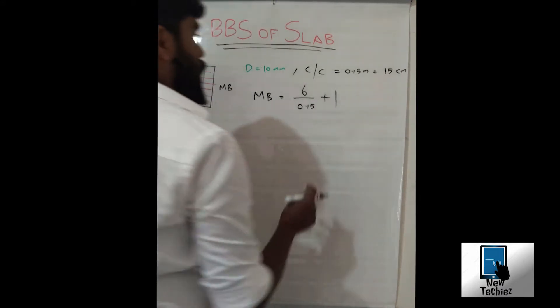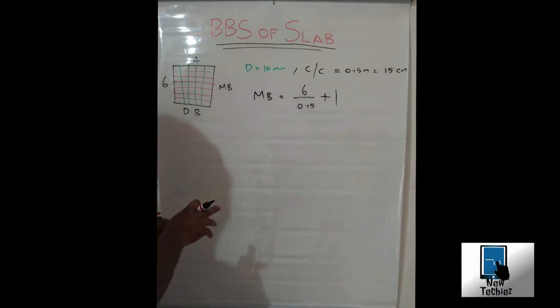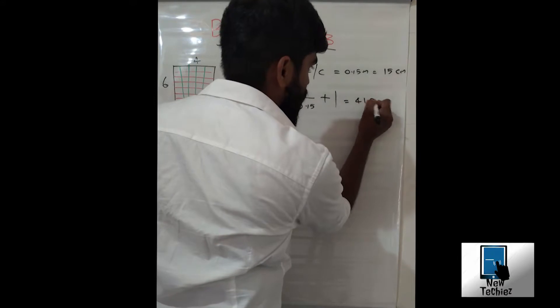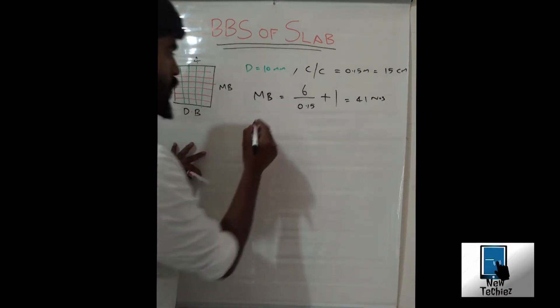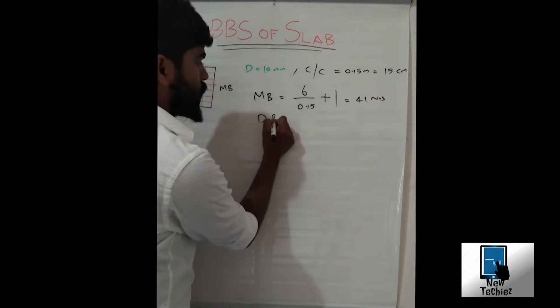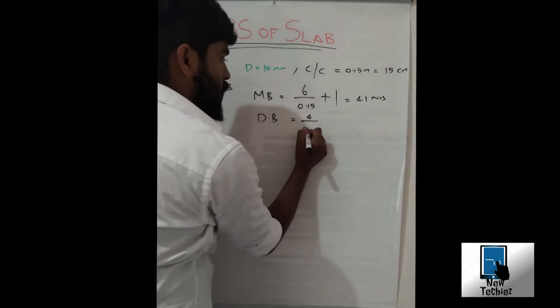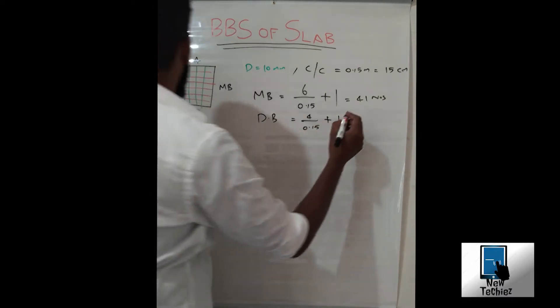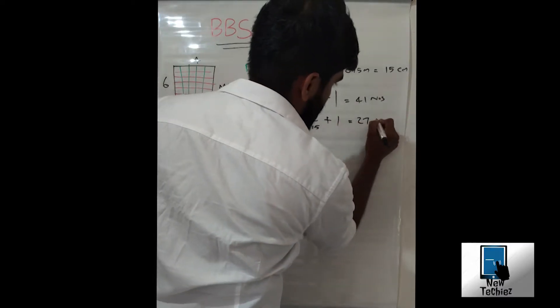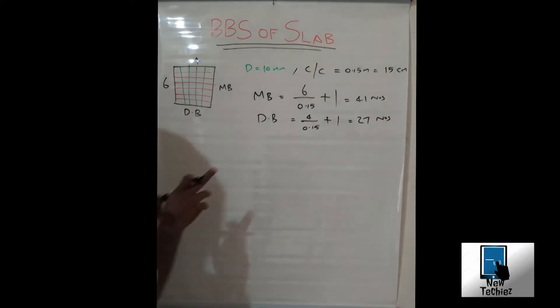For distribution bar, DB is equal to four meter divided by center to center distance plus one. We get a value of 27 numbers.